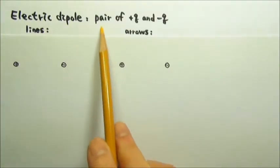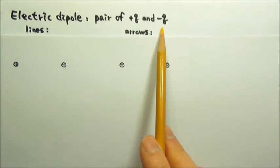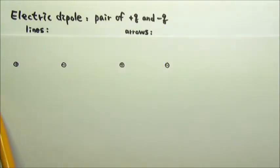An electric dipole is a pair of equal and opposite charges. Please draw electric field lines for the dipole here and draw electric field arrows there.